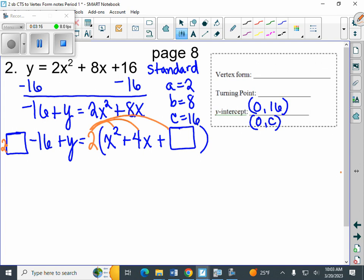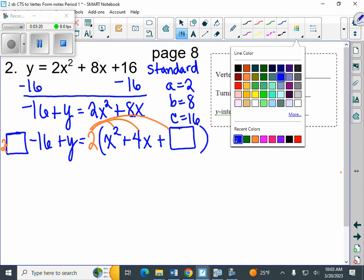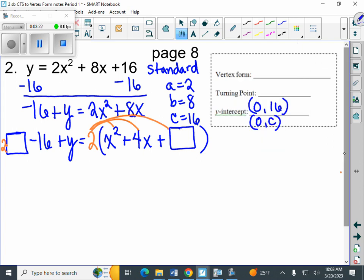Now that we have that set up, everything else is the same. So what's going to happen is, we need to figure out, well, what value goes in that box. So we look at the number in front of the box, 4, and we divide by 2, is squared.